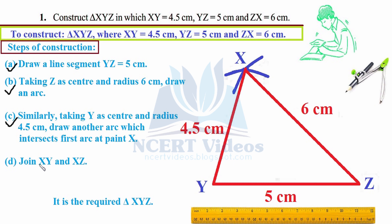Now join XY and XZ. That gives you the required triangle with the given measurements. We took three sides, measured them with compasses, and drew the triangle. The principle governing this construction is that the sum of any two sides of a triangle is always greater than the third side. That is your first question.